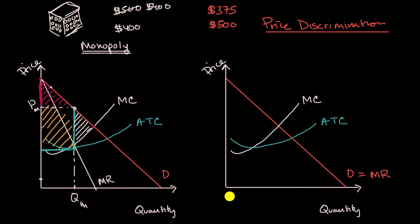Well, once again, it would be where marginal costs intersects marginal revenue, but the marginal revenue curve is now the demand curve. So it'd be right over there. That's the quantity that this monopoly would produce. And then what's the price it would get? Pause this video and think about that.